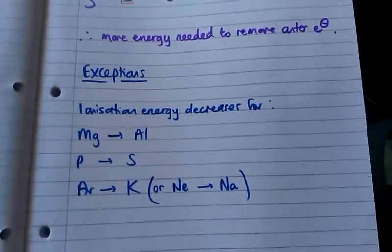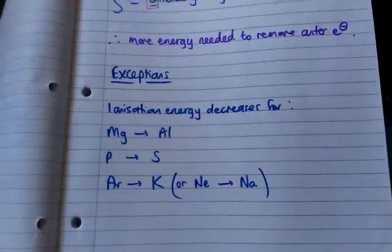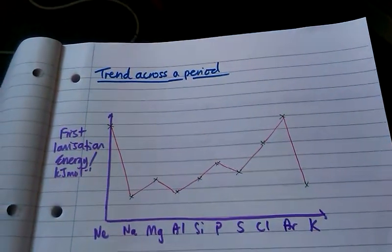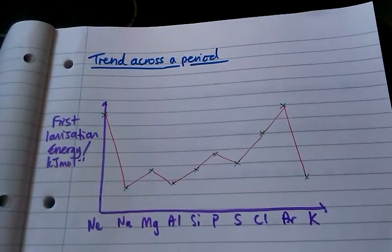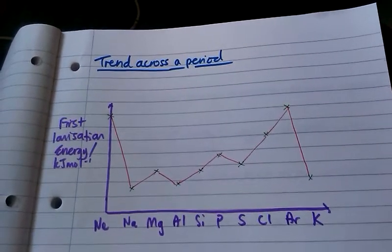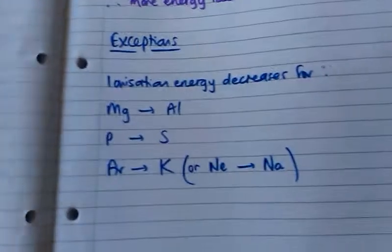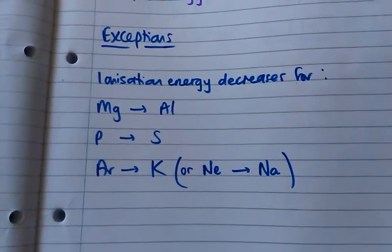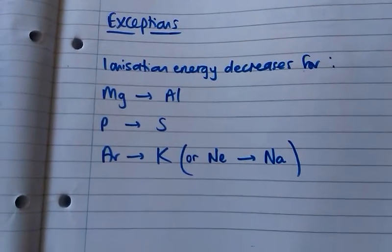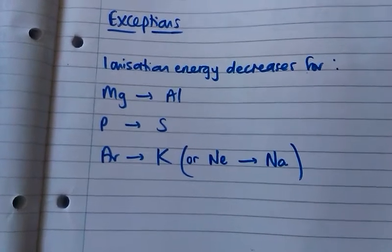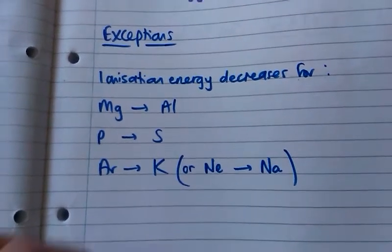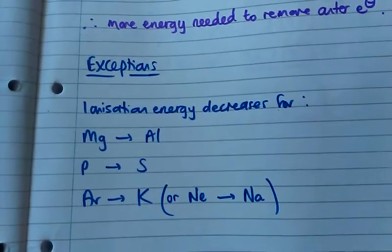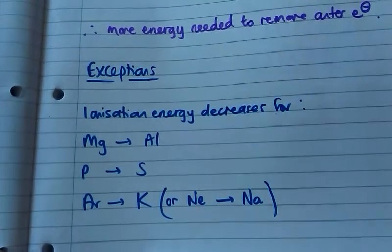There are some exceptions to this rule. Looking at the diagram, there are decreases in ionization energy for magnesium going to aluminium, phosphorus going to sulphur, and argon going to potassium, or neon going to sodium. I'm now going to go through why that is for each of these cases.